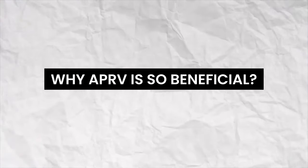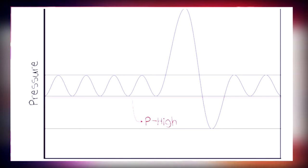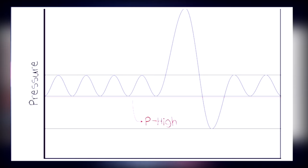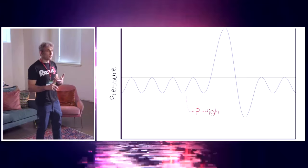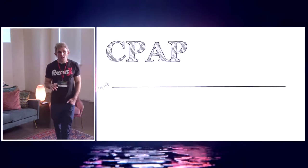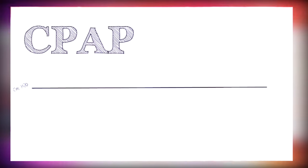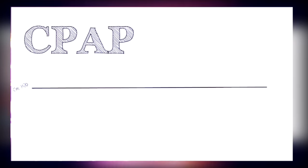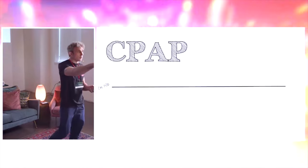APRV is essentially a mode of ventilation that uses a high pressure to get patients back to FRC. Most disease states — excluding asthma — are diseases where your lung has gotten wet and heavy and you're below FRC, and that's where respiratory distress comes from. If the patient has an intact respiratory drive and normal respiratory muscles, getting them back to FRC lets them breathe more normally. The easiest way to think about APRV is CPAP — a pressure level meant to reinflate the lung, put you at FRC, and allow the patient to breathe on their own.